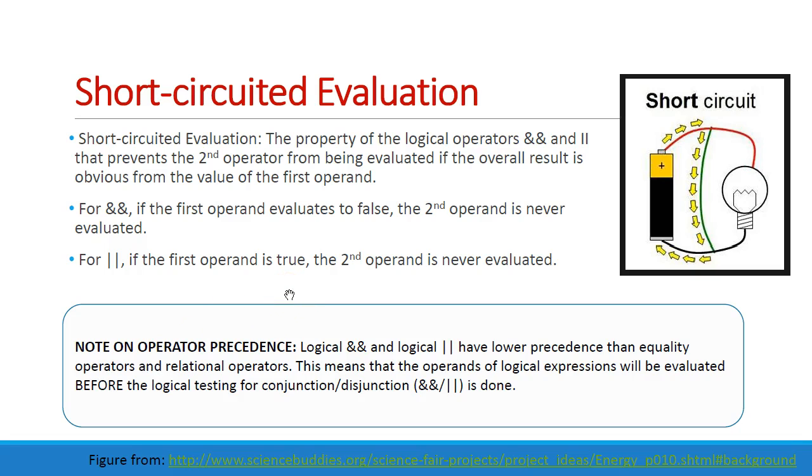Short-circuited evaluation. Java is not always going to evaluate both operators. It may only evaluate one or the other. If you have A and B, if A fails, it's not going to bother to evaluate B. For ORs, if it's A or B and A is true, then it doesn't need to evaluate B. It already knows that the result is true.